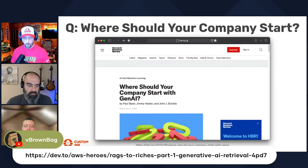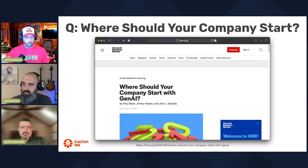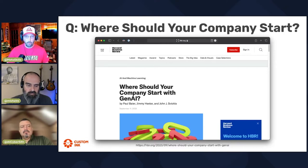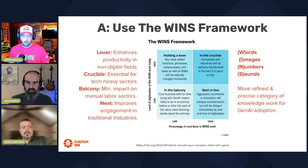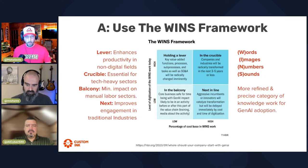What we are going to talk about is where your company can start. Once you have the four cardinal points — am I starting a new business or an existing business with AI? — it's still kind of hard to pick up on generative AI and where to apply it. I wanted to share this framework called the WINS framework from the Harvard Business Review. WINS stands for Words, Images, Numbers, and Sounds — things within your organization that people are doing that you can automate.